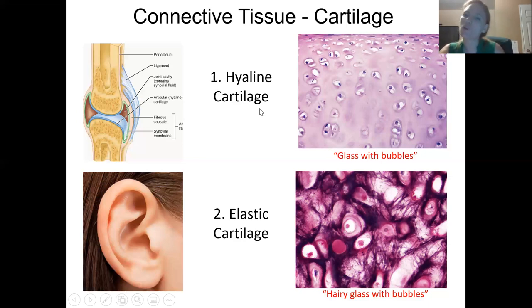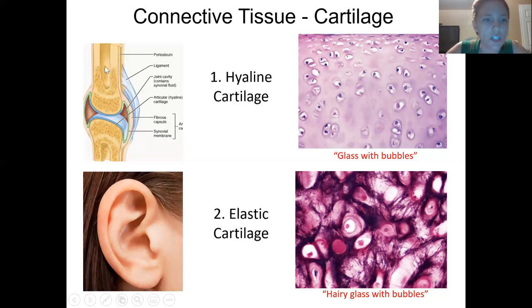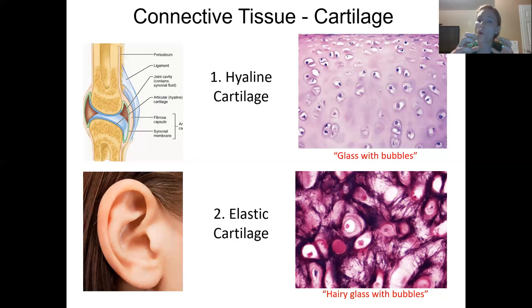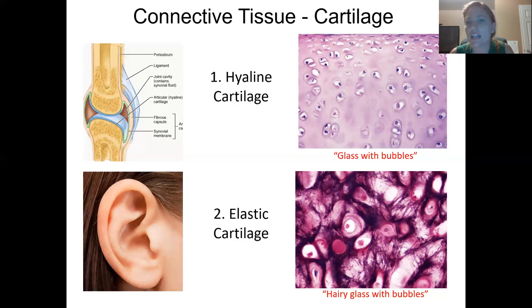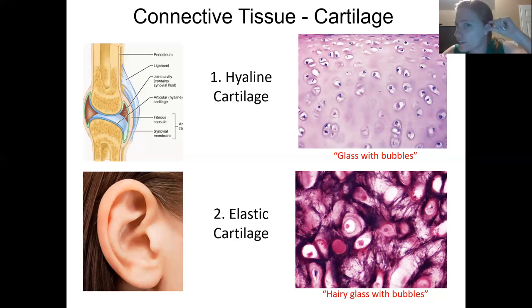Hyaline cartilage is found in multiple places — it provides structure in the trachea and in the larynx, and it also caps the end of bones at synovial joints, creating what's called articular cartilage. Elastic cartilage, because of the presence of those elastic fibers, is stretchy and recoils, making it flexible — that's why your ear can flex in all different directions and spring back. The tip of your nose is made of hyaline cartilage and is not as flexible as the elastic cartilage in the ear.